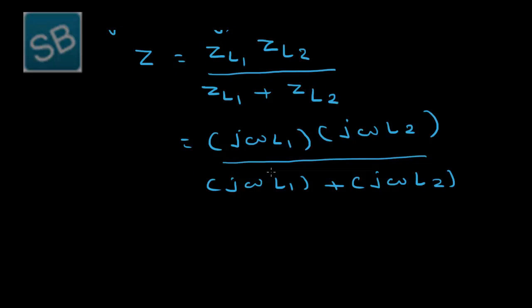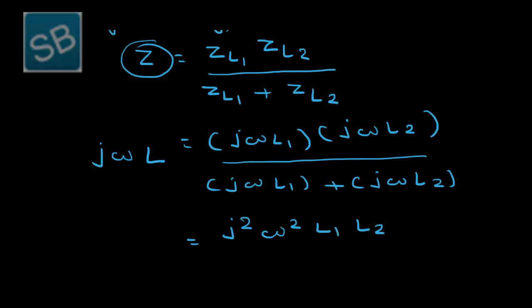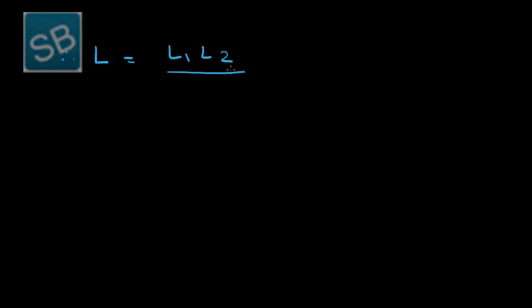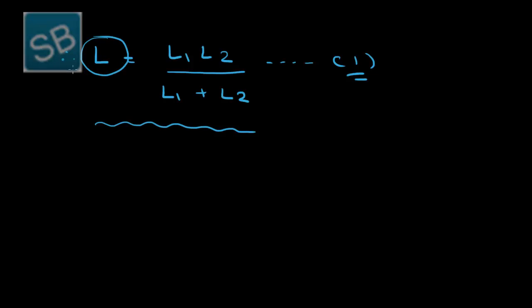Substituting: Z equals jωL1 × jωL2 divided by (jωL1 + jωL2). If the resultant inductor is L, then Z equals jωL. So jωL equals j²ω²L1L2 divided by jω(L1 + L2). Here j² becomes −1, but one j and one ω cancel, giving L equals L1L2 divided by (L1 + L2). This is the final formula for the resultant inductance of two inductors in parallel.